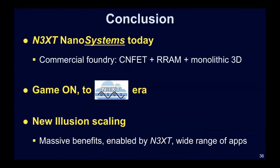To end this presentation: first, N3XT nano systems are possible today — it's not some fantasy. It's happening in a commercial foundry with CNFETs, resistive RAM, and monolithic 3D. To go back to that National Academy study: is it game over or do we go to the next level? My tongue-in-cheek answer is it's game on to the N3XT era. A really great opportunity moving forward is this new illusion scaling that can provide massive benefits, enabled by N3XT for a wide range of applications.